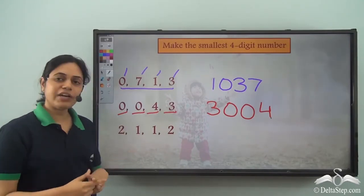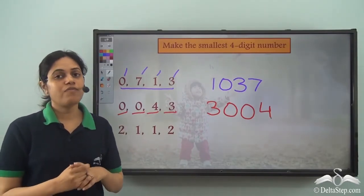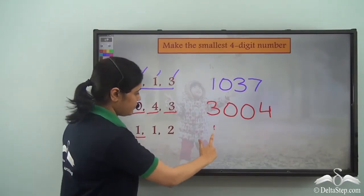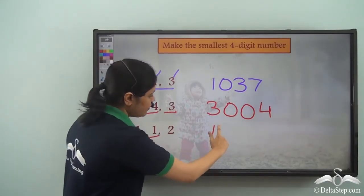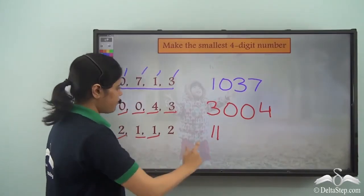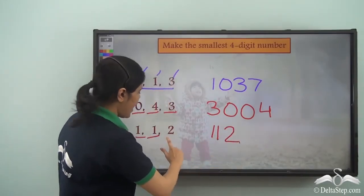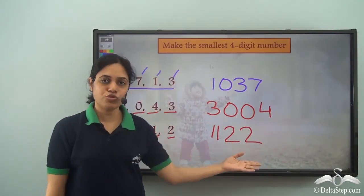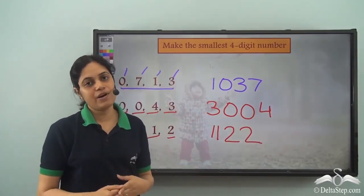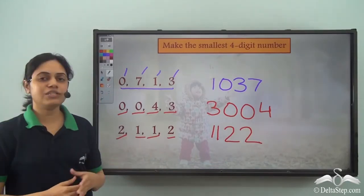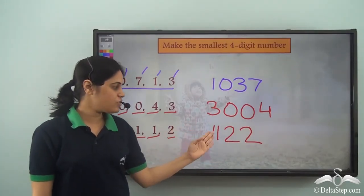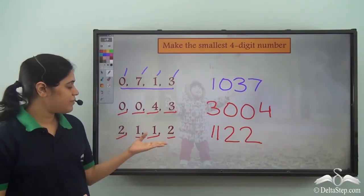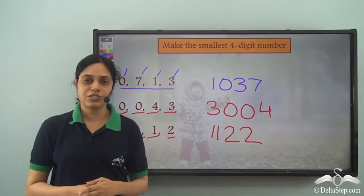For digits 2, 1, 1, 2 — we have 2 twice and 1 twice. Since 1 is smaller than 2, we start with 1, then another 1, then 2, then another 2. So 1122 is the smallest number that can be made using these digits.